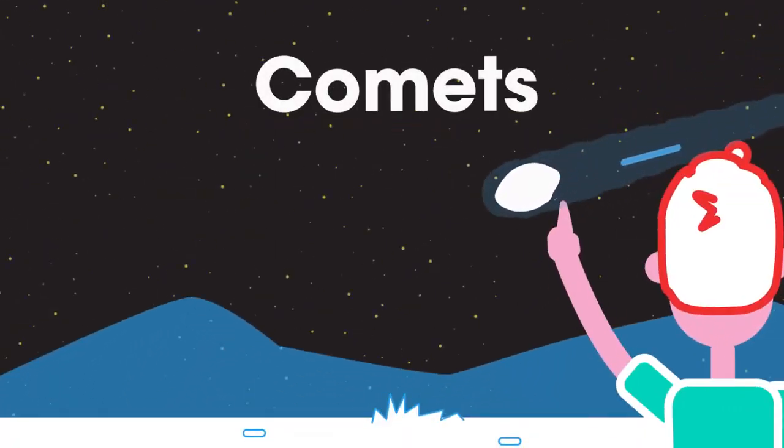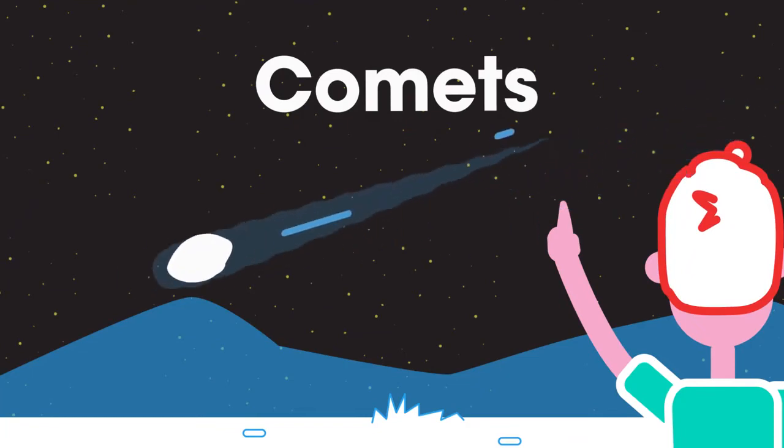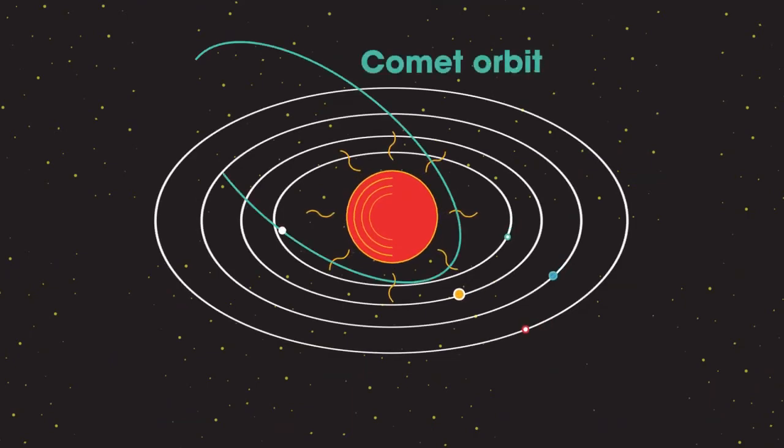People once thought the appearance of a comet in the night sky was a warning of a tragic event about to happen. Comets are similar to large, dirty snowballs, a few tens of kilometres across,